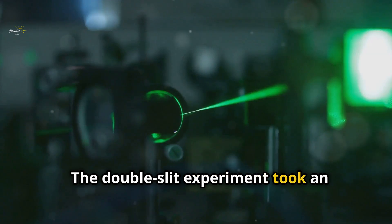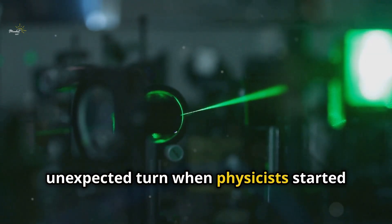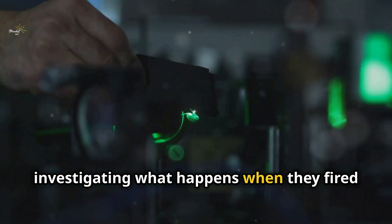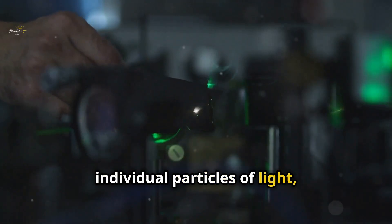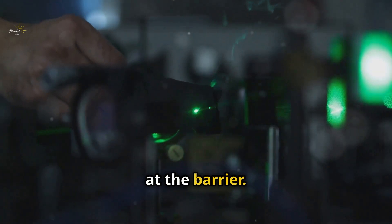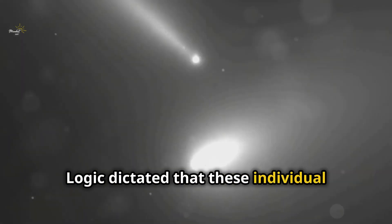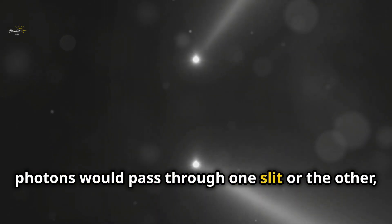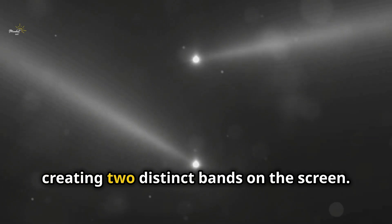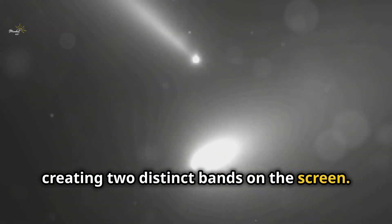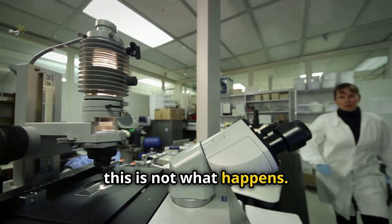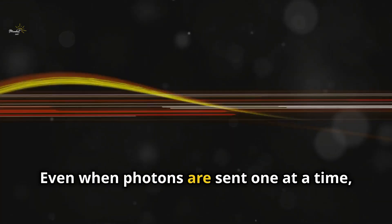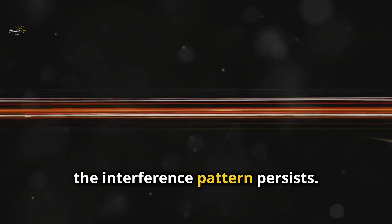The double-slit experiment took an unexpected turn when physicists started investigating what happens when they fired individual particles of light, photons, at the barrier. Logic dictated that these individual photons would pass through one slit or the other, creating two distinct bands on the screen. Astonishingly, this is not what happens. Even when photons are sent one at a time, the interference pattern persists.